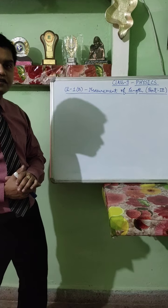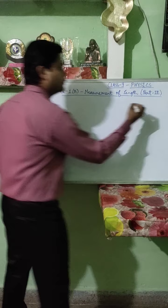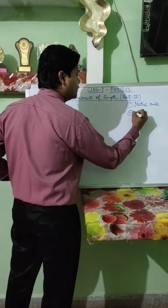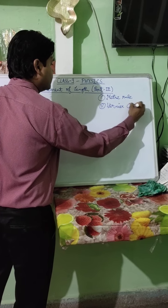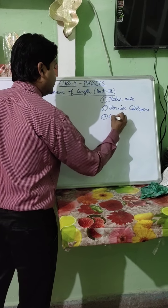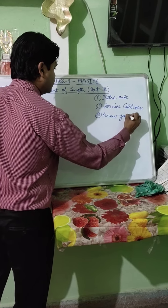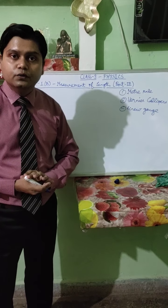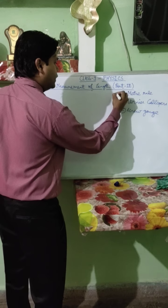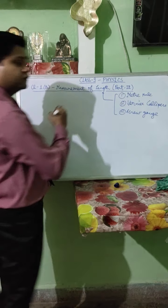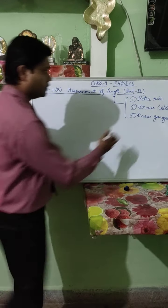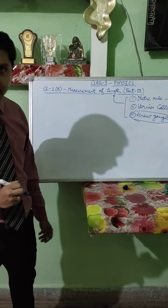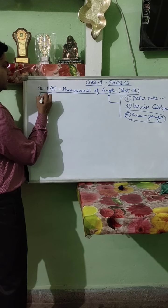In the last days, we discussed about 3 devices: the first device was meter rule, the second device was vernier calipers, and the third device was screw gauge. These 3 devices are used for the measurement of length depending on their accuracy. We have discussed meter rule and vernier calipers, and the topic for today's discussion will be screw gauge.